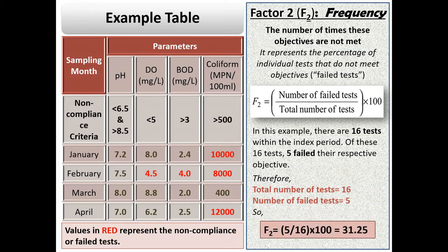Therefore, frequency can be calculated by the formula F2 = (number of failed tests/total number of tests) × 100, which gives F2 = (5/16) × 100 = 31.25. Similar to scope, frequency varies between 0 and 100.